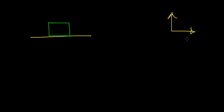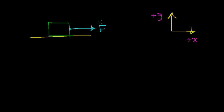The coordinate system is going to tell us which direction the forces are acting relative to each other. In this case, I'm going to call the horizontal direction the x direction, and the up and down direction the y direction. What I want to do is figure out how much force is required to overcome the frictional force and get an object to start moving in the positive x direction.